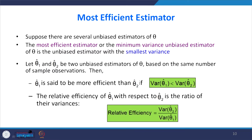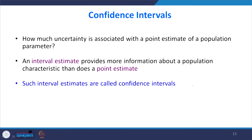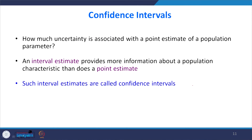A confidence interval expresses how much uncertainty is associated with a point estimate of a population parameter. For example, if I say the temperature is 35 degrees, the uncertainty in that point estimate is expressed with the help of a confidence interval. An interval estimate provides more information about population characteristics than a point estimate. Such interval estimates are called confidence intervals.